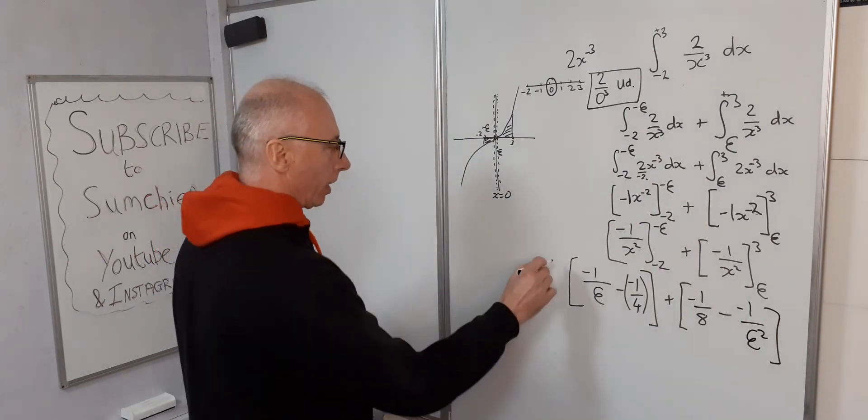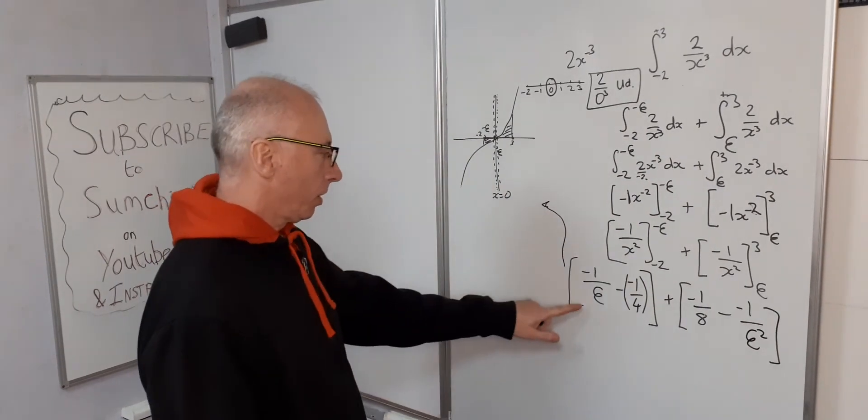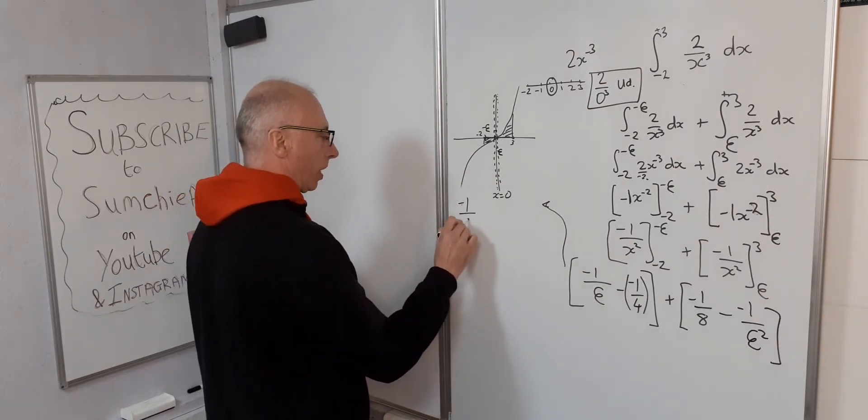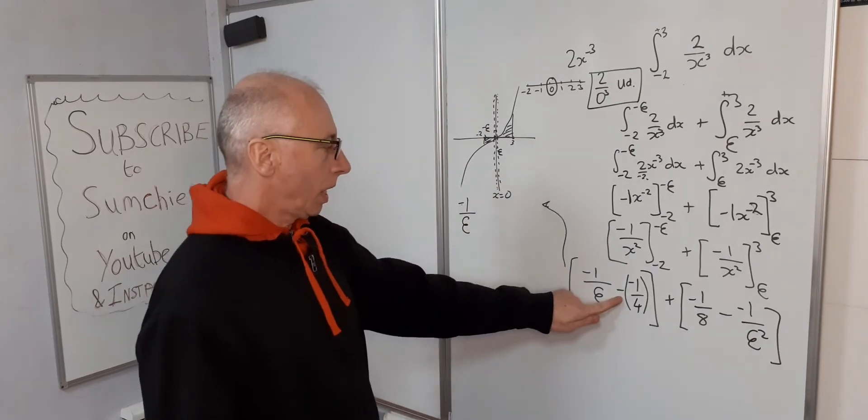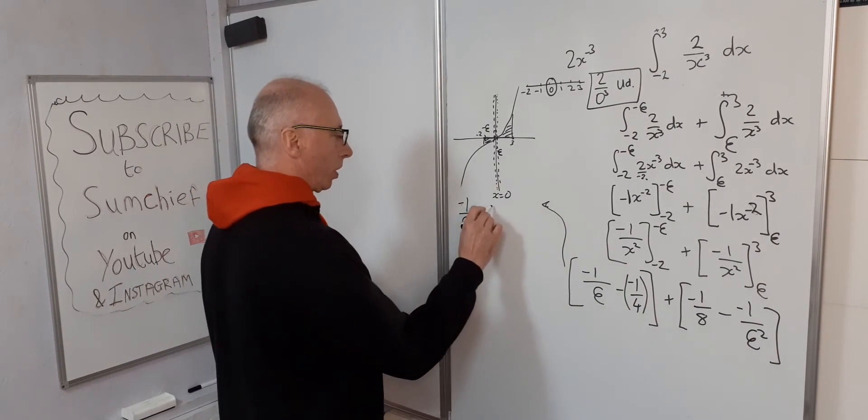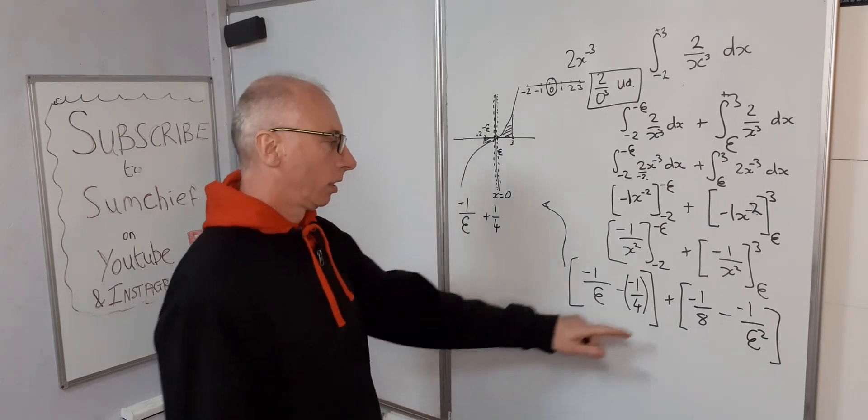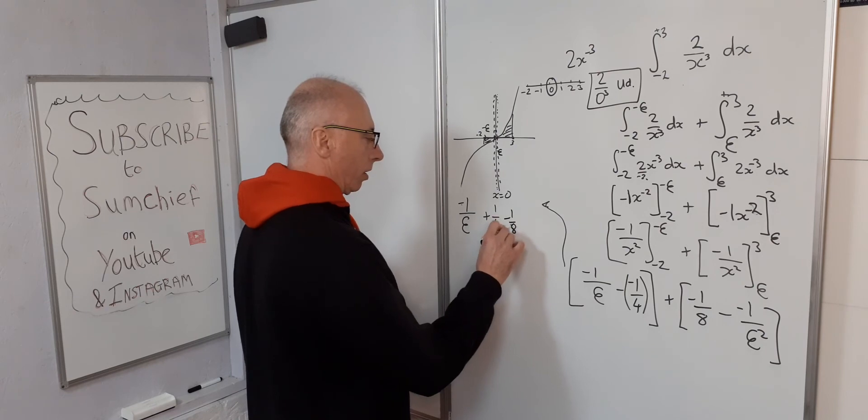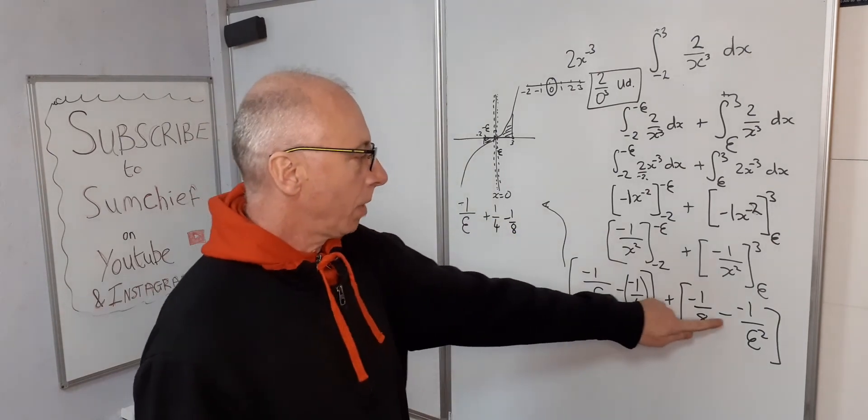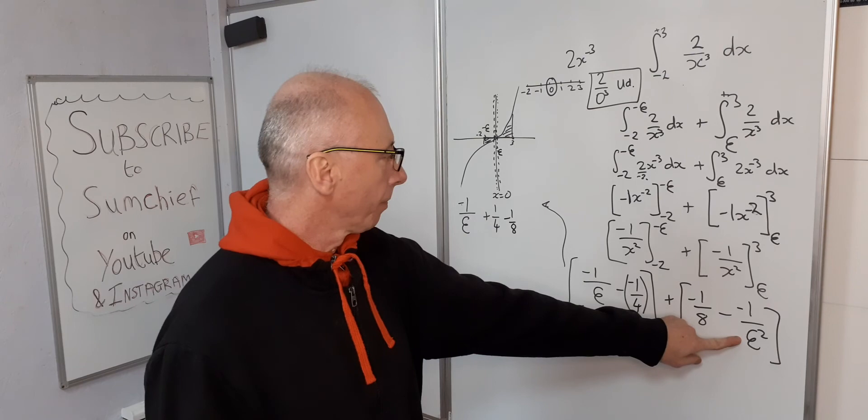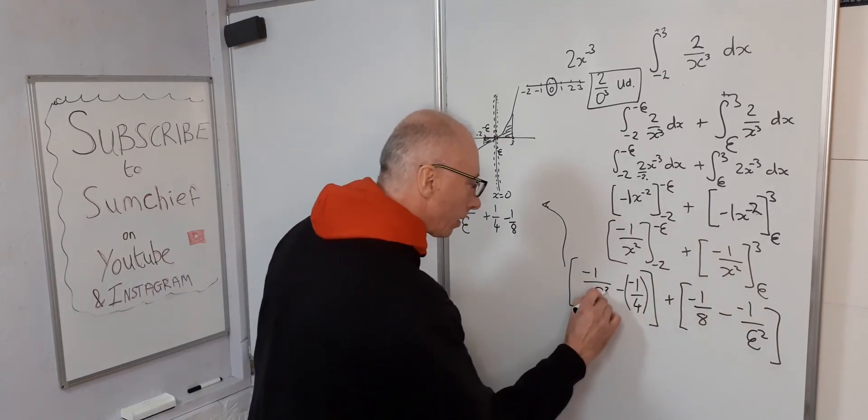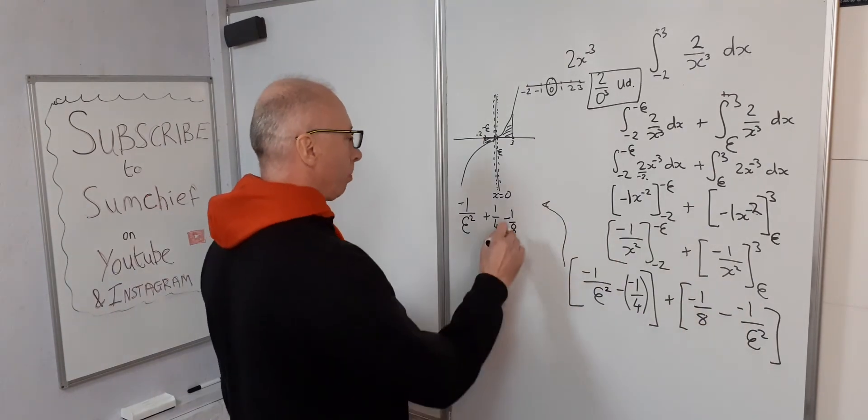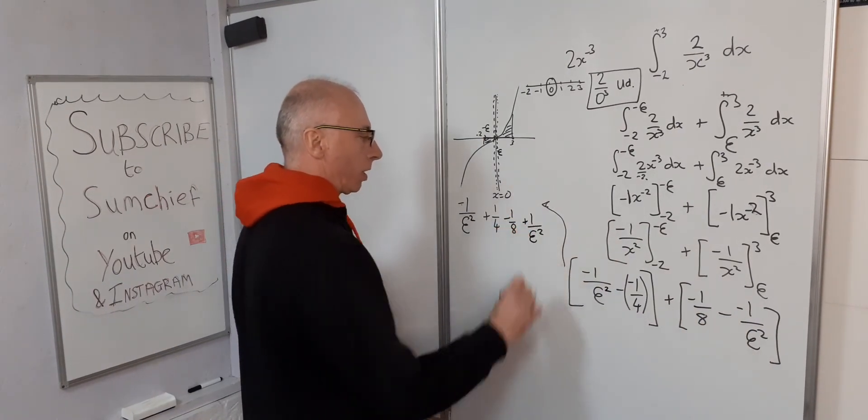Okay, right, now let's bring this up here, gives us a bit more space. So negative 1 over epsilon squared, minus minus a quarter, so that's plus a quarter. Plus minus 1 over 8, so that's minus 1 over 8. Then plus minus minus 1 over epsilon squared. Oh, missed out the squared here, sorry.